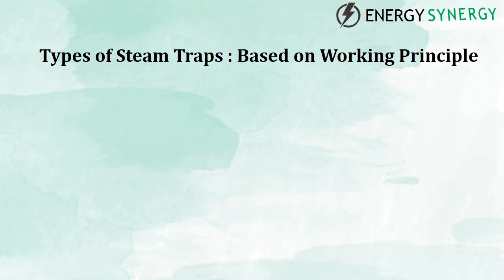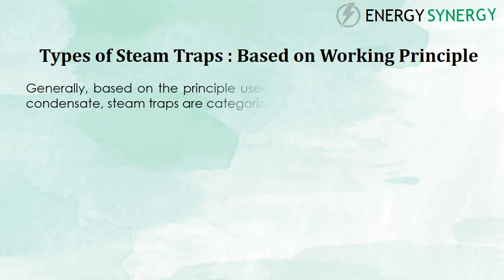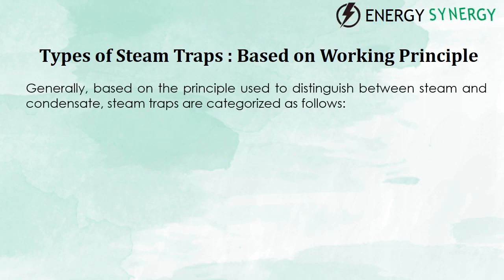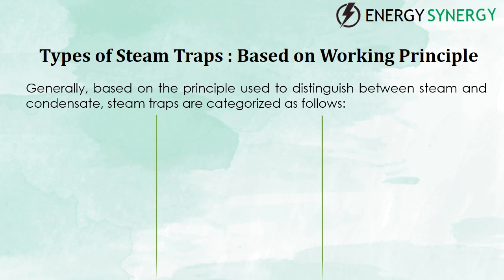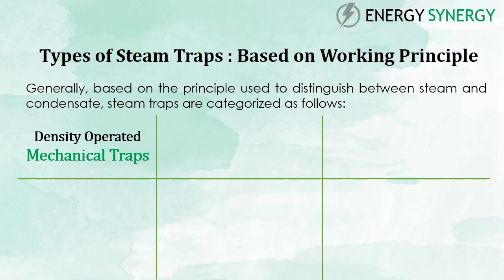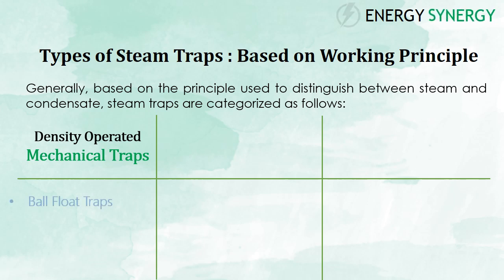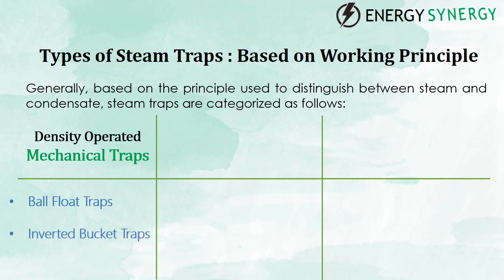Generally, based on the principle used to distinguish between steam and condensate, steam traps are categorized as follows. Number one is density-operated traps, that is mechanical traps. Mechanical traps are categorized into two types: number one is the ball float trap, and number two is the inverted bucket trap.